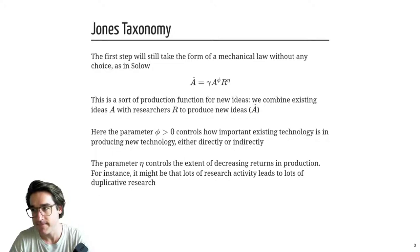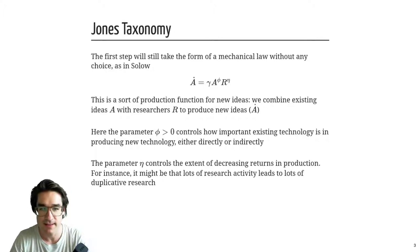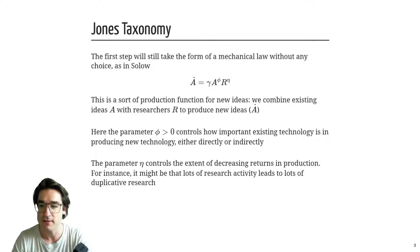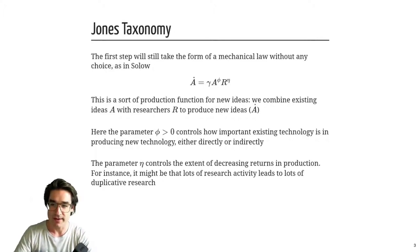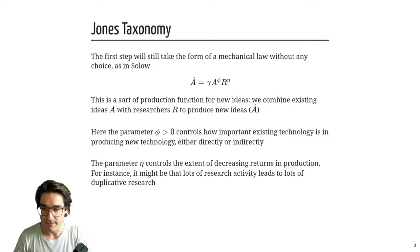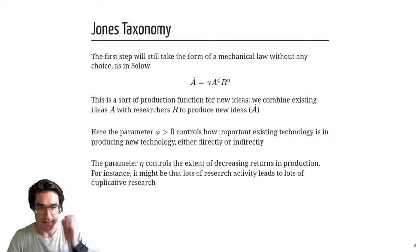That's on an ideas level. On a more technological level, you also use existing technology to produce new technology — we use computers to compute how a protein folds and how we can use that in medicine. So you directly use existing technology. There are at least two channels through which phi operates, and phi combines all of those: how much do we need old technology to produce new technology?